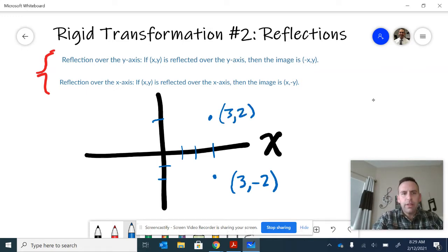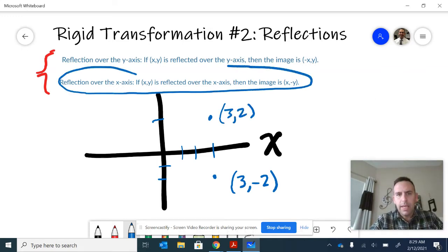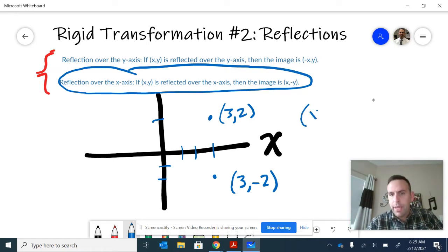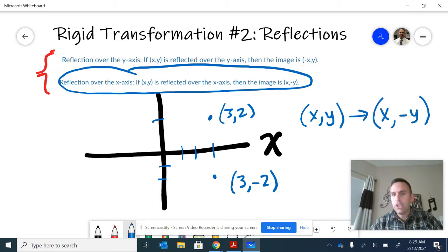And so that's where we get this property. If you reflect across the x-axis, the only thing that changes is the y-value. You went from (x, y), any point, to (x, -y); it changed the sign.